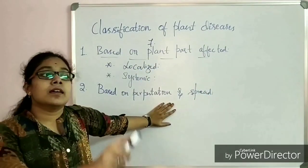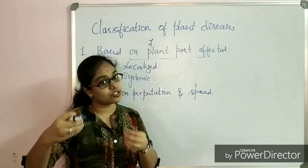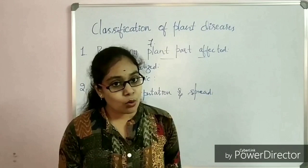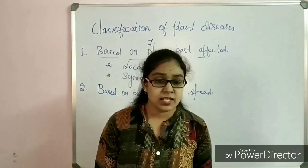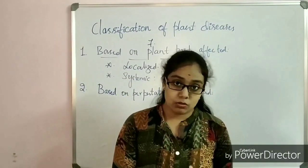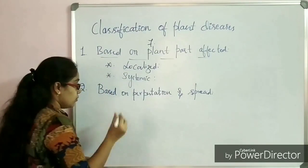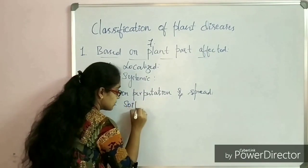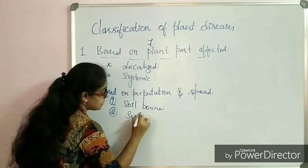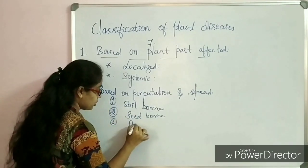In this category we have three different types of plant diseases classified based on the agencies through which the pathogen enters the host body. The pathogen may enter the host plant through the soil, through the air, or through the seeds. Based on this, plant diseases are classified into: first, soil-borne disease; secondly, seed-borne disease; and thirdly, air-borne disease.